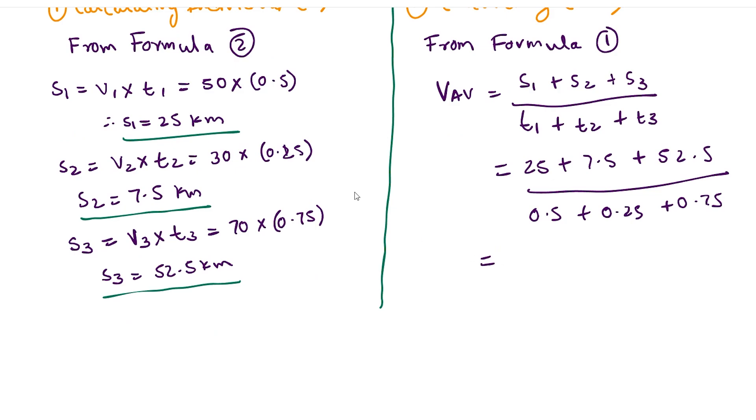There's nothing tricky going on here, we're just simply substituting all the values that we have calculated or that is given to us. And if we add all these values we get 85 upon 1.5, so vav is 85 upon 1.5. If we further simplify it we get vav as 56.67 kilometer per hour because all our quantities are either in kilometers or in hours.